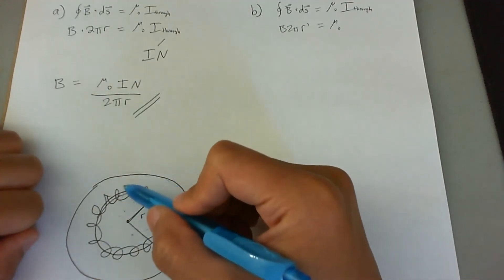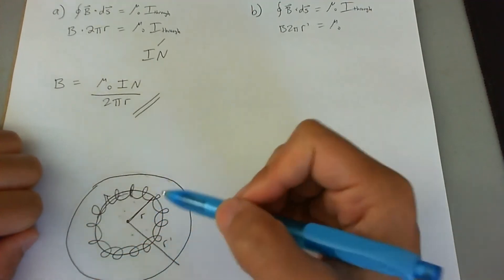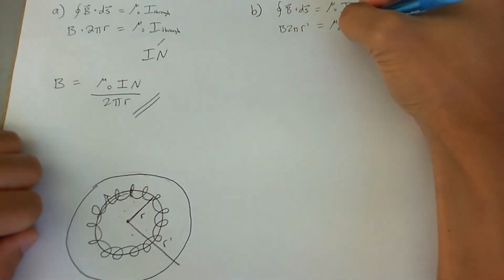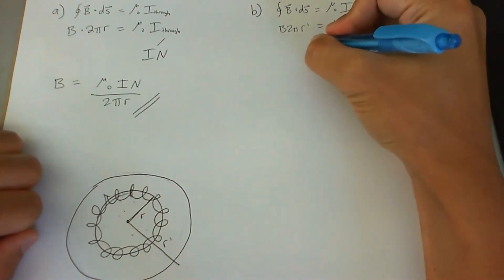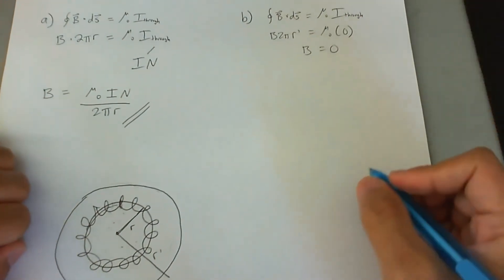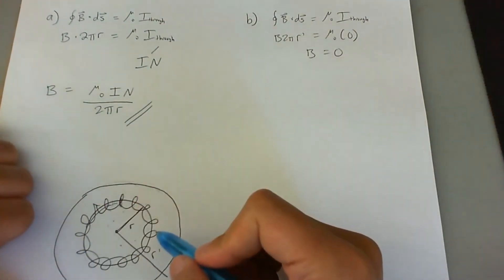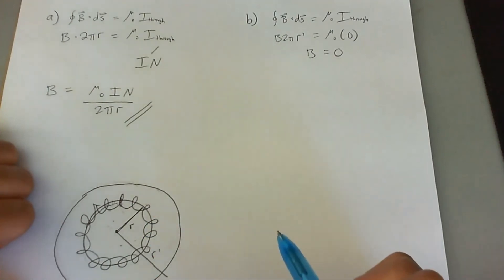The net current is still going to be zero because as much current that goes down, it will come up on the outer side of the smaller loop. So net I is actually going to be zero, which means that the B field is going to be zero outside of the toroid with a larger radius than the toroid.